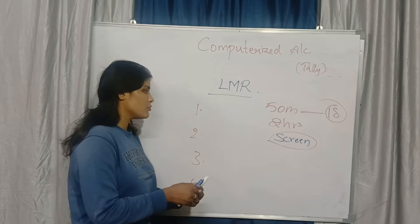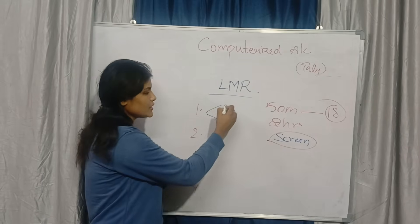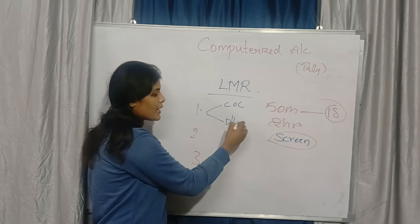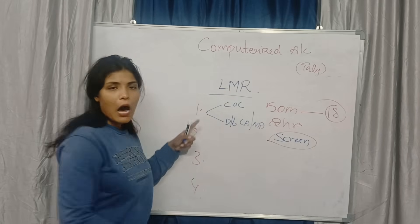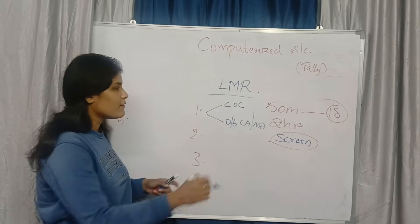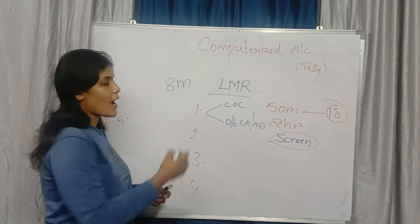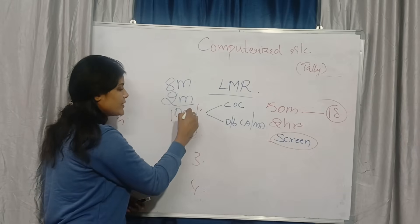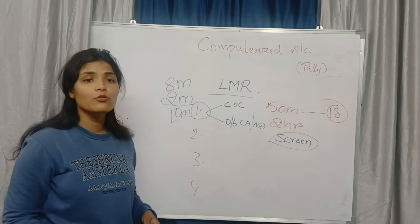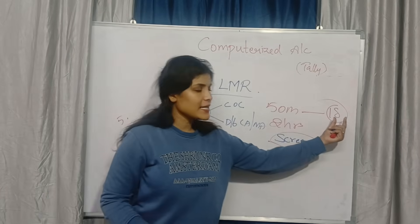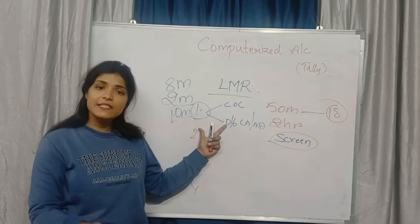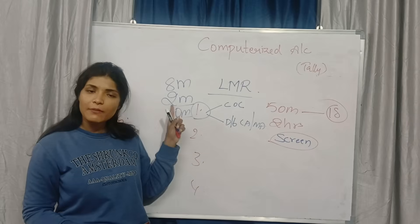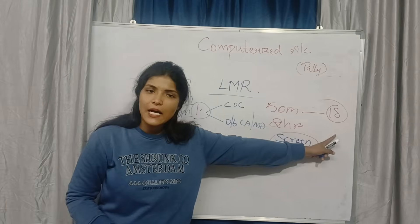From first unit, first two questions only. First one is creation of company, and also differences between computerized accounting and manual accounting. Out of these two questions, one question definitely they will come for 8 marks and 2 marks. Total how many marks weightage? 10 marks weightage you can score from unit number 1. Passing is 18. From first unit itself you can score 10 marks with these two questions. These two questions, 10 marks attempt, passing is 18 marks.